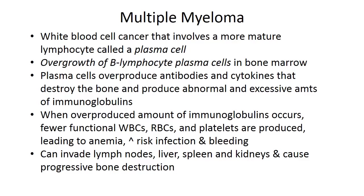Multiple myeloma is a white blood cell cancer involving a more mature lymphocyte called a plasma cell. Overgrowth of B-lymphocyte plasma cells in the bone marrow is definitive of multiple myeloma. These plasma cells overproduce antibodies and cytokines that destroy bone, and produce abnormal, excessive amounts of immunoglobulins such as IgG and IgA, resulting in fewer functional white blood cells, red blood cells, and platelets. This can lead to anemia, increased infection risk, increased bleeding, and invasion of lymph nodes, liver, spleen, kidneys, and progressive bone destruction.